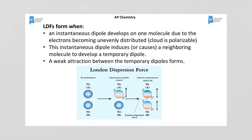I found a graphic that does a good job of showing students why non-polar molecules would have any attraction to another non-polar molecule. You've got two neon atoms. The electrons in the cloud randomly become unevenly distributed — that's what we mean when we say the cloud is polarizable. The top neon atom is partially negative on one side of the cloud and partially positive on the other, which we call an instantaneous dipole. It's not permanent; it just happens for an instant. Because these neon atoms are close enough together, it induces a dipole on the neighboring atom, and these two temporarily polar atoms have a weak attraction for each other.